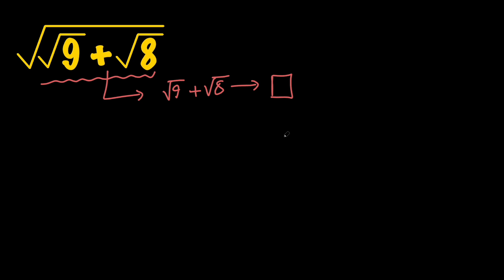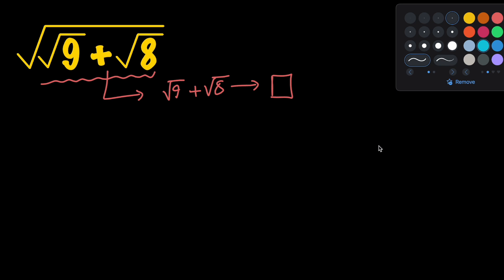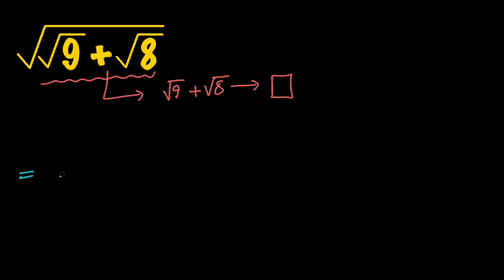So let's go ahead and do that. The first thing I'm going to do is replace √9 with 3, because we know that the square root of 9 is 3. So we have the square root of 3 + √8.